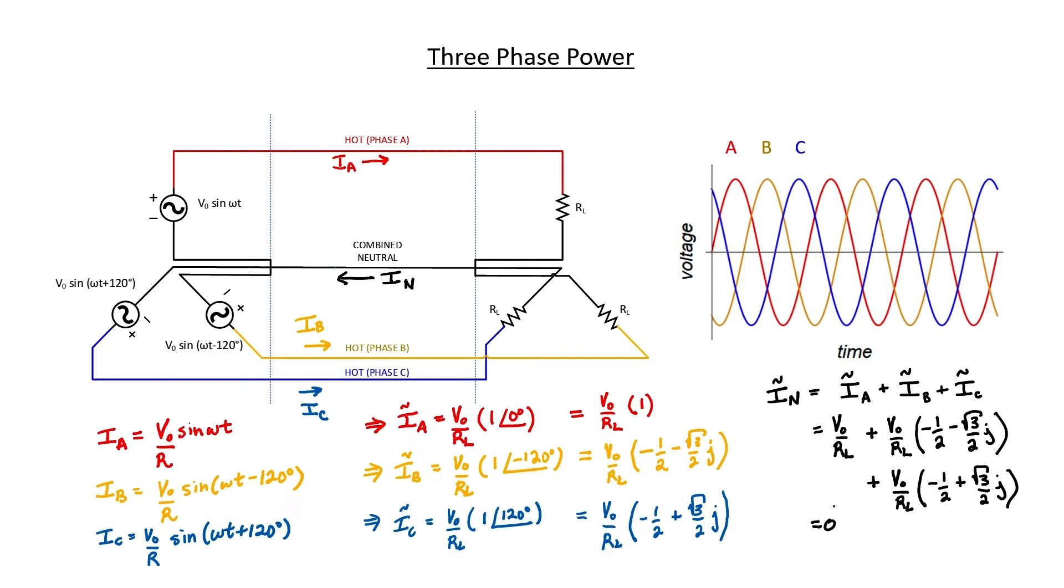That's the advantage of three-phase power distribution. We don't need a neutral at all. I could just simply get rid of the neutral wire. Now of course, all of this depends on everything being balanced. The amplitudes have to be the same in each of the three phases. The loads, the resistive loads, have to be the same as well. But assuming that you can maintain balance in your power network, then you don't need a neutral return wire. That saves a lot of copper.